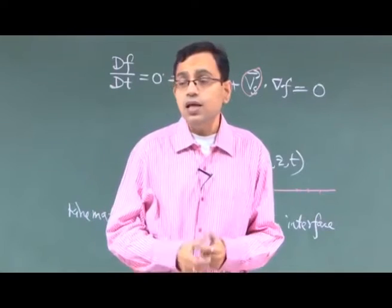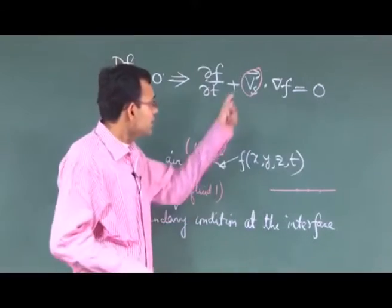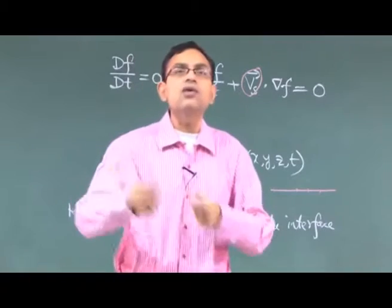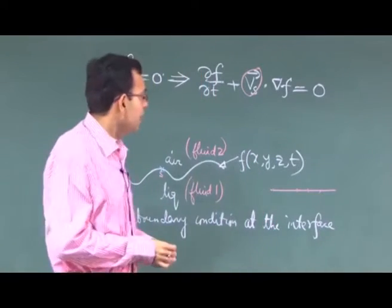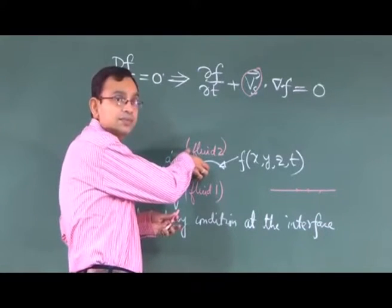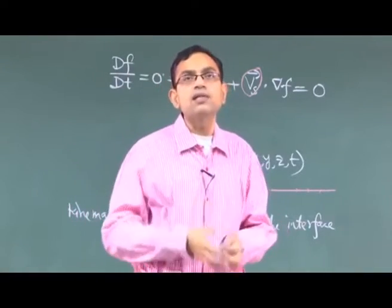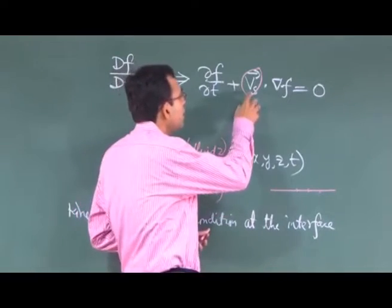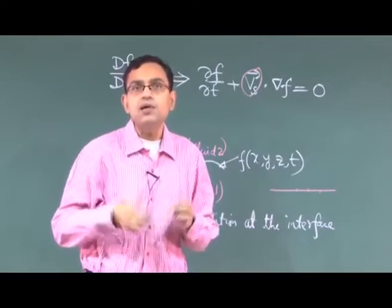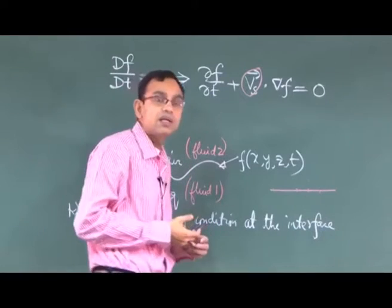The question is: is this surface velocity Vs the same as the fluid velocity? This velocity is the same as the fluid velocity when there is no net mass flux across the interface. When the two phases are immiscible — that is, they do not mix with each other — there is no net mass flux across the interface, and then Vs equals V of the fluid. But when there is a mass flux across the interface, Ur, the net velocity in the normal direction, is the velocity of the fluid relative to the point on the surface.